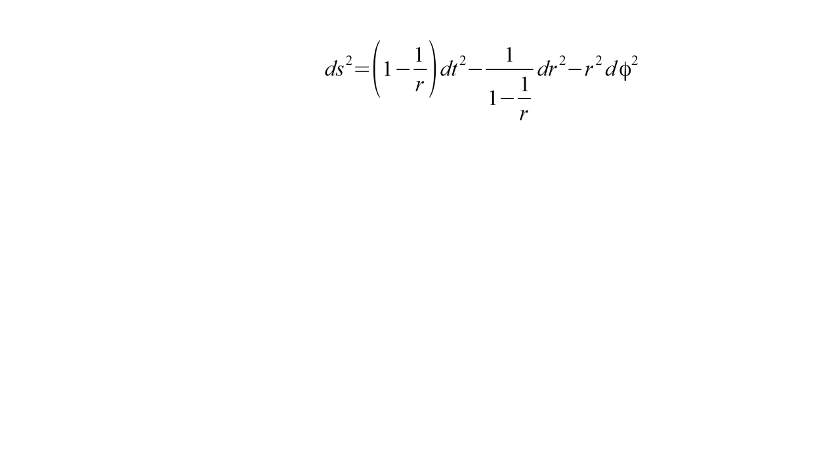We can understand these results using the metric that tells us the elapsed time ds on a clock that moves between events separated in bookkeeper coordinates by dt, dr, and d phi.